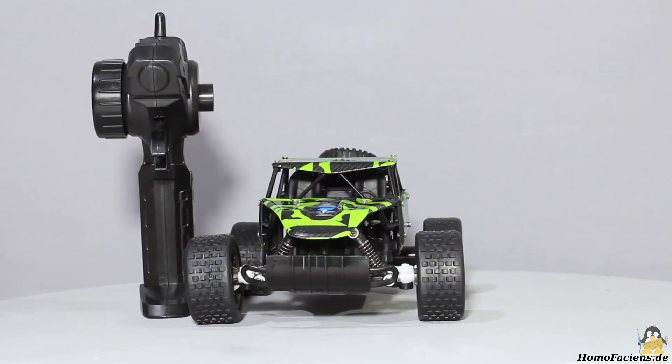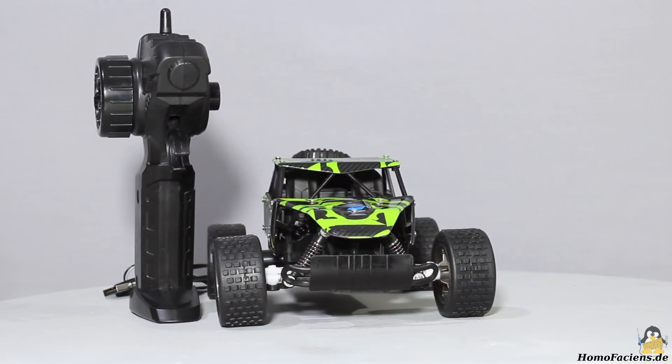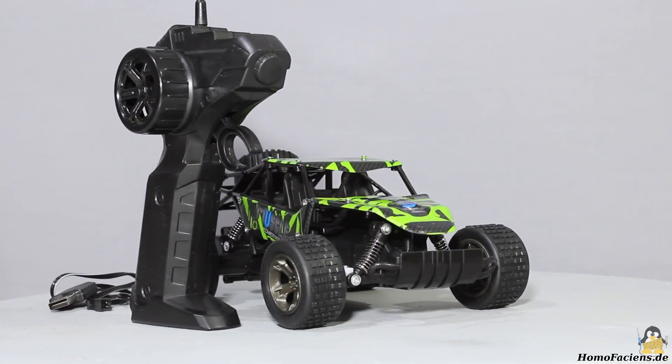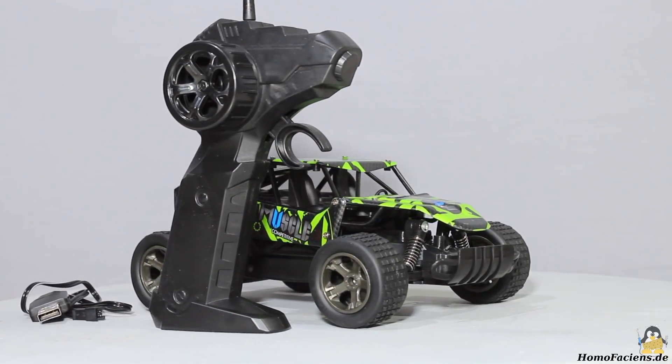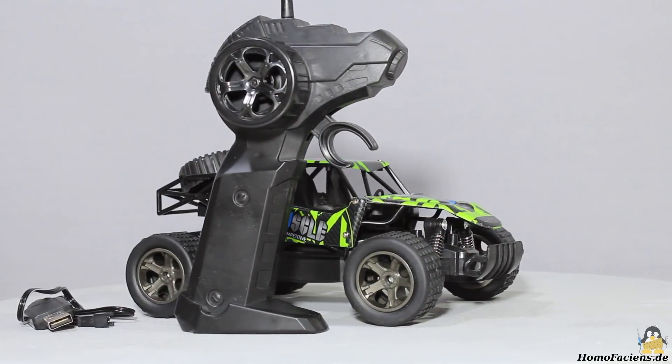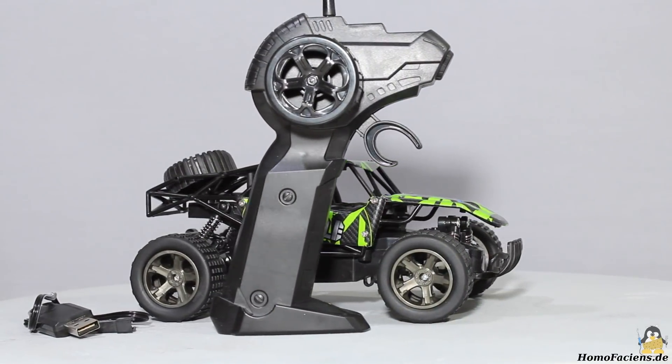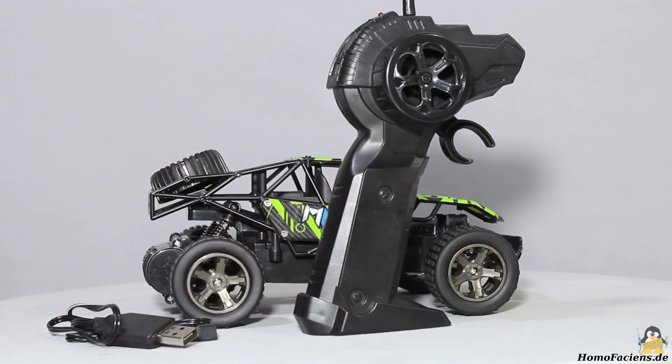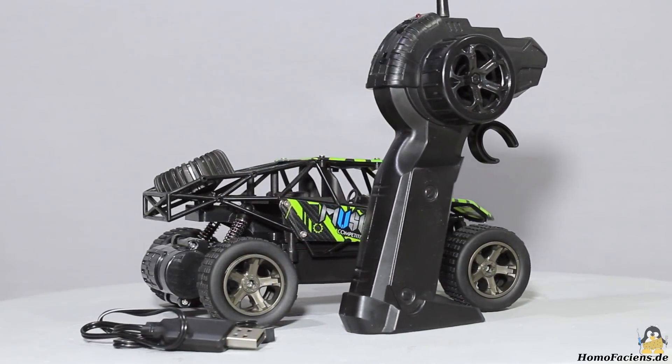The toy car ships with a remote control in pistol grip design and a USB charger. The dimensions are 22 x 15 x 10cm and the total weight is approximately 430g. It costs less than 20€ which makes this an extremely cost efficient base for a working robot car.